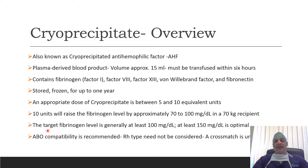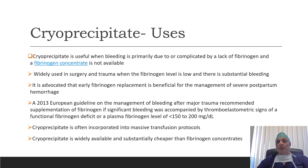In case of cryoprecipitate, ABO compatibility is recommended but not mandatory, unlike plasma where it is required. Like plasma, Rh typing and cross-matching are not required. Cryoprecipitate is useful when bleeding is primarily due to low fibrinogen, or when bleeding is complicated by low fibrinogen and fibrinogen concentrate is not available, as usually occurs in the setting of polytrauma, acute massive hemorrhage, or massive transfusion.